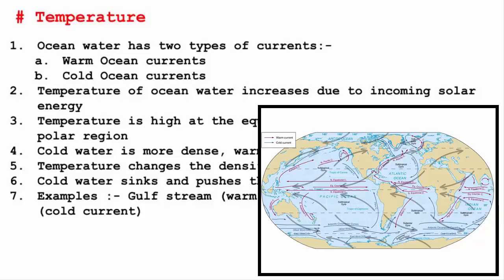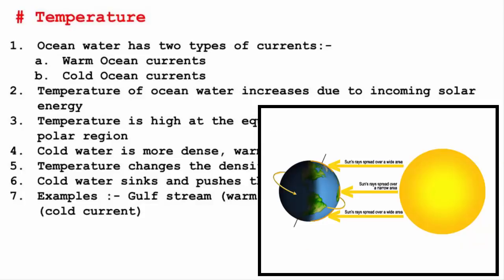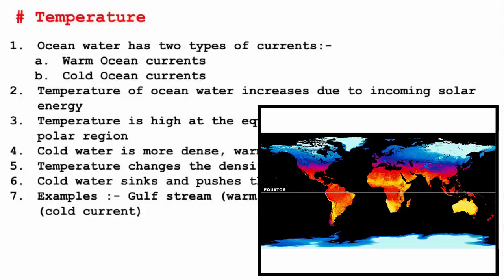And that is possible because of the incoming solar energy. We are also aware of the fact that temperature decreases as we go away from the equator towards the poles. That means temperature is high at the equatorial region and temperature is low at the polar region.